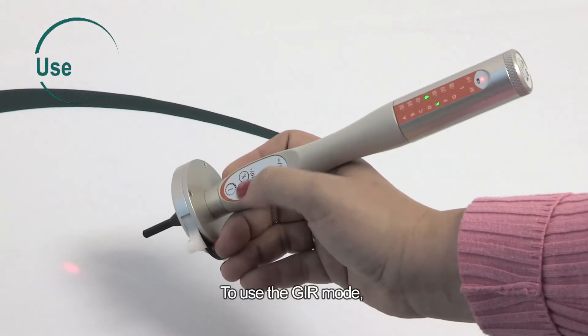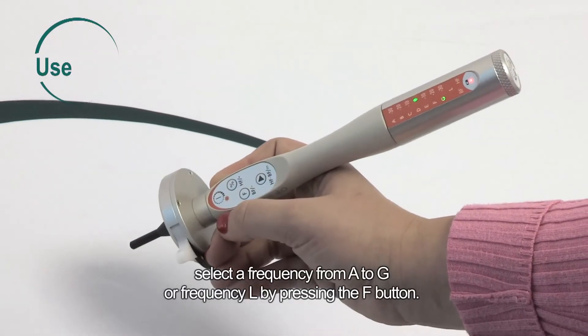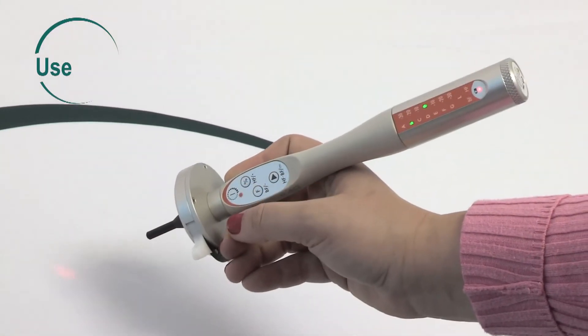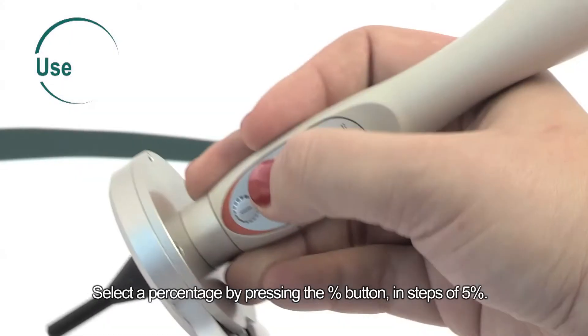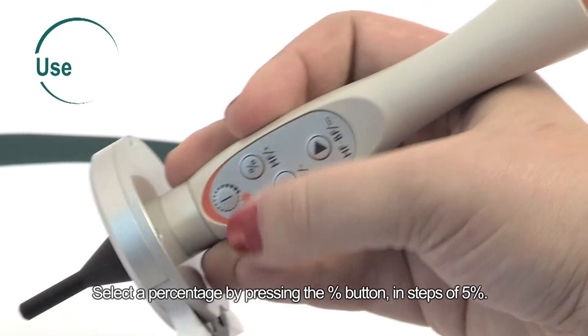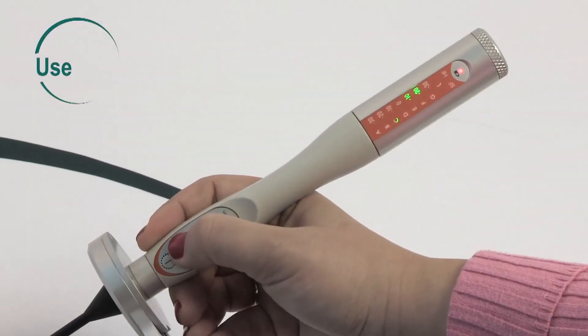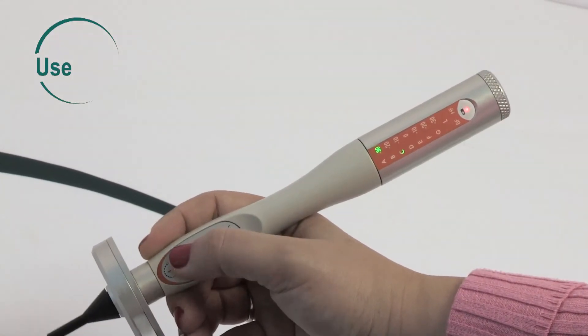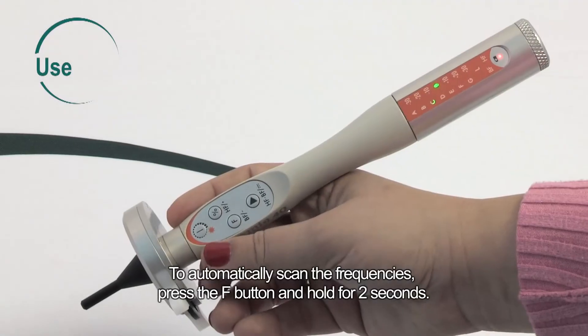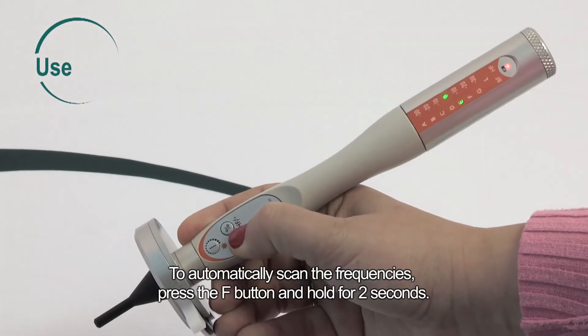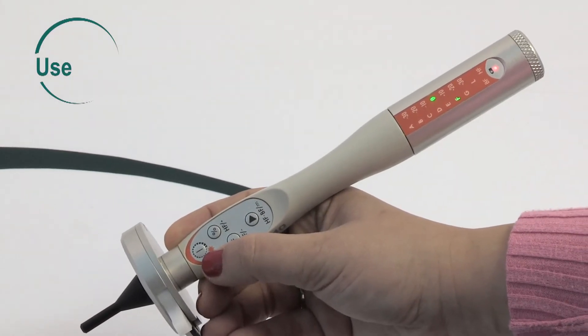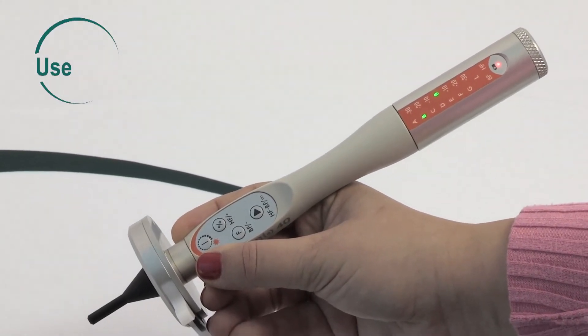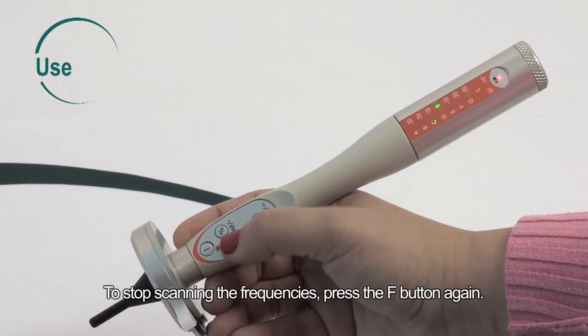To use the JIER mode, select a frequency from A to G or frequency L by pressing the F button. Select a percentage by pressing the percent button in steps of 5%. To automatically scan the frequencies, press the F button and hold for two seconds. To stop scanning the frequencies, press the F button again.